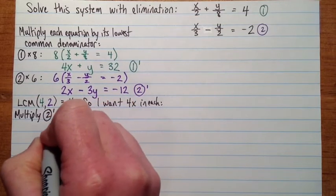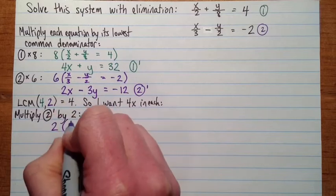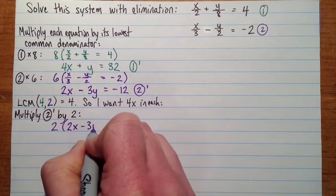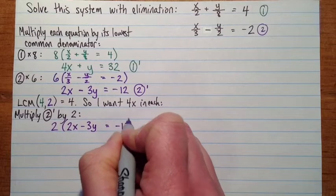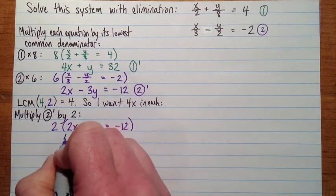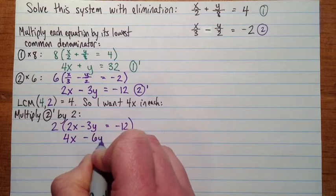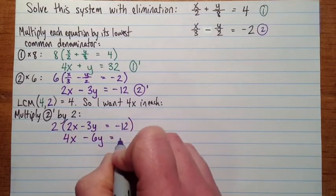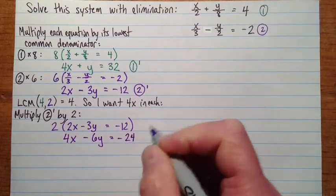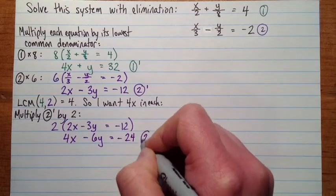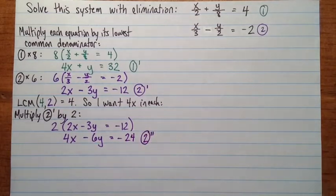So we've got 2 times, and then I'll just copy 2 prime. 2x minus 3y equals negative 12. So that gives us 4x minus 6y equals negative 24. And then this one we can call 2 prime prime, or 2 double prime.